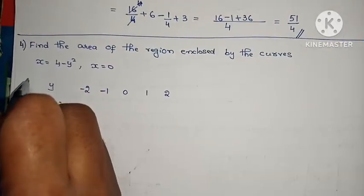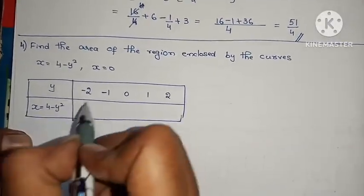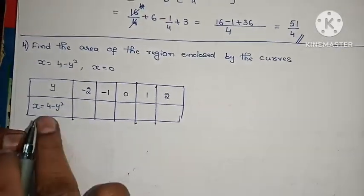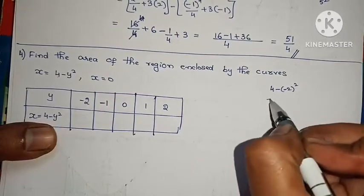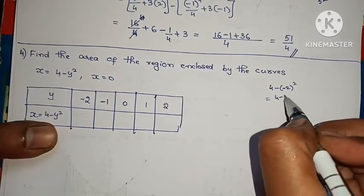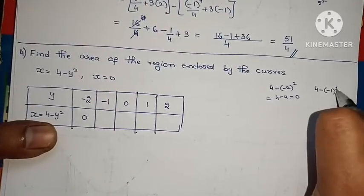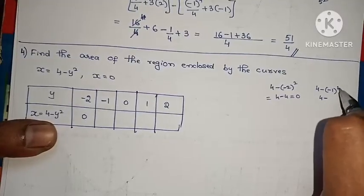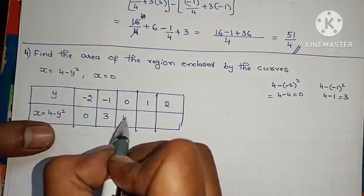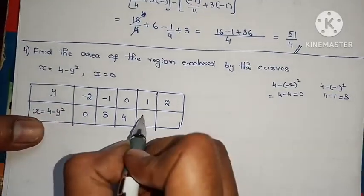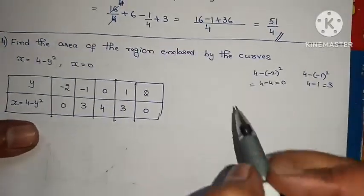Substituting: y = −2, x = 4 − (−2)² = 4 − 4 = 0; y = −1, x = 4 − 1 = 3; y = 0, x = 4; y = 1, x = 3; y = 2, x = 0. So the table of values is complete. Now we will draw the graph.